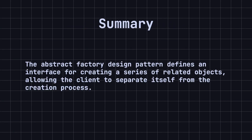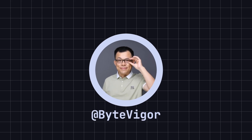Let's summarize today's lesson. The abstract factory design pattern defines an interface for creating a series of related objects, allowing the client to separate itself from the creation process. This not only improves the flexibility and maintainability of the code, but also makes it easy to replace or add new object creation logic. In practical development, we can use the abstract factory pattern to manage complex object creation processes and improve code quality. Thank you for watching today's video. If you found this video helpful, please like it and subscribe to the ByteVigor channel so you don't miss more exciting content. See you in the next video.